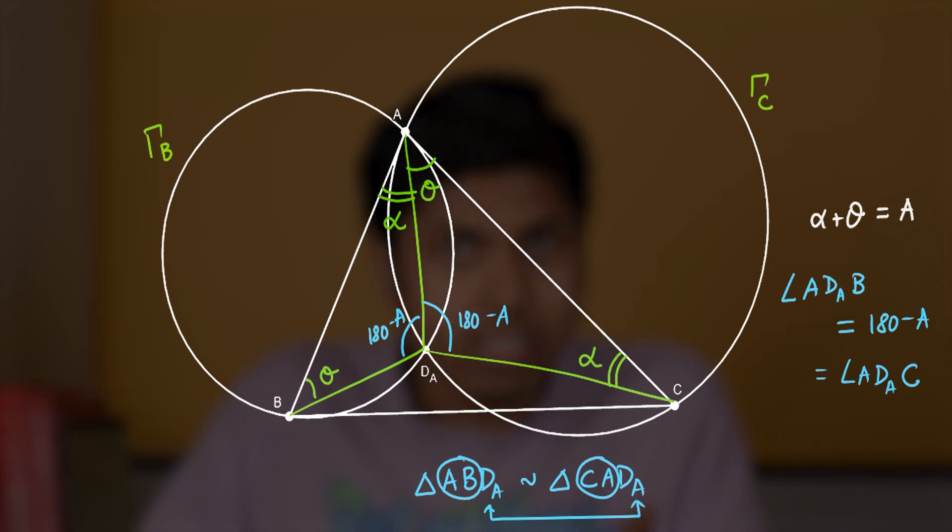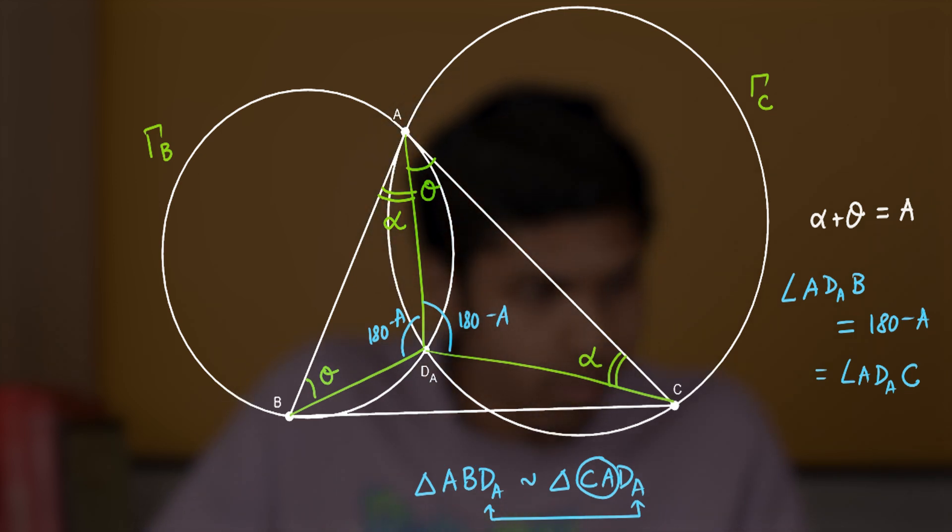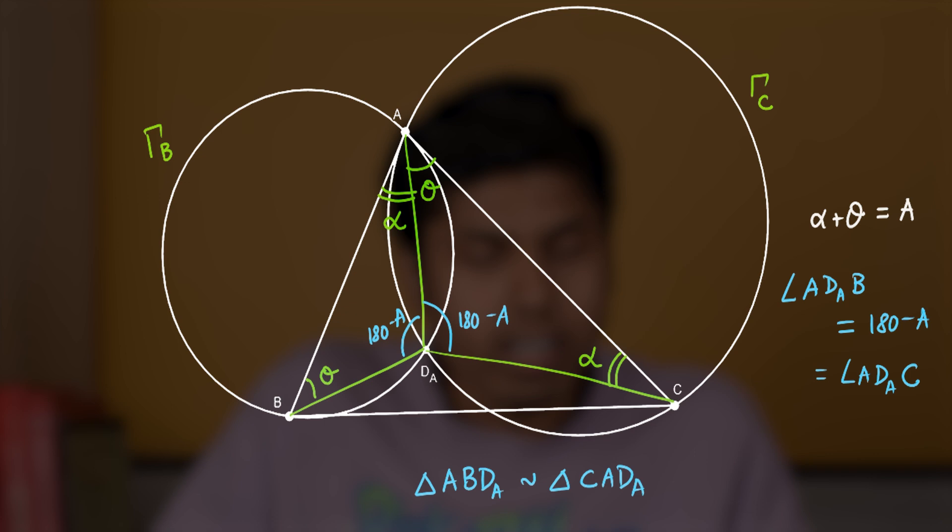That takes the line CA to AB. This means when you rotate the line CA about D_A by some angle so that D_A C coincides with D_A A, and then if you dilate it, maybe you can shrink it or dilate it depending on the ratios, it will exactly match onto the line AB.